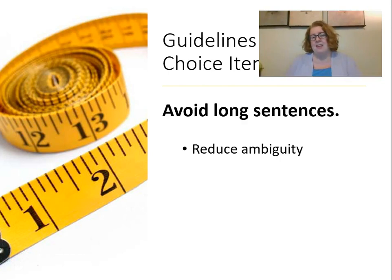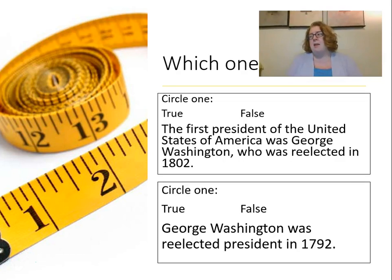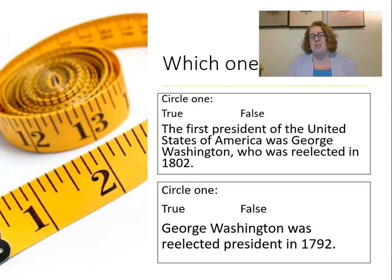Avoid long sentences — it reduces ambiguity and reading demands, and you can include more items with less chance for student confusion. For example, 'The first president of the United States was George Washington, who was reelected in 1802' is worse than 'George Washington was reelected president in 1792.' The second is better because it states just one fact. In the first, there are multiple statements — the part about being first president is correct, but the reelection date is not — and it gets confusing quickly.